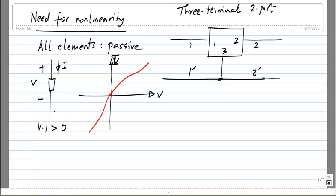For instance, the amplifier into which I am speaking is a two-port — I plug the microphone somewhere and then I get the speaker output from elsewhere. That is a two-port network. I apply the input somewhere and represent whatever load it is with a resistor; it could be a loudspeaker, and I take the output elsewhere.